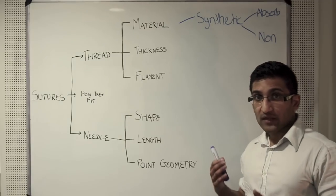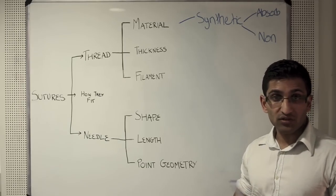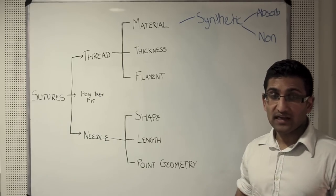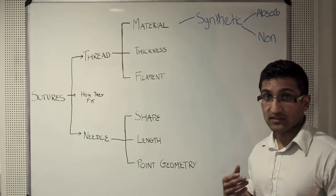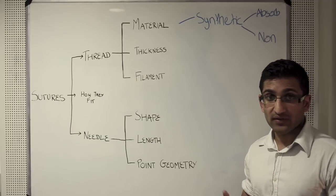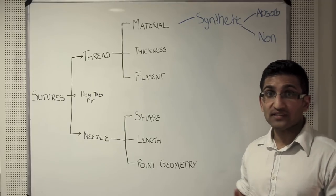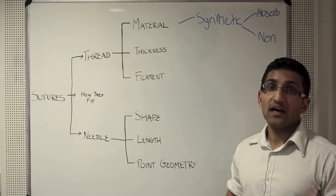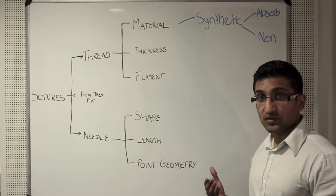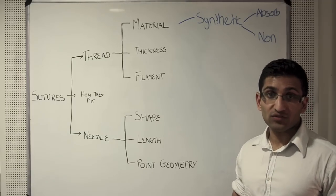You tend to use absorbable sutures on deeper structures and not on superficial structures. This is because as the suture material dissolves or is broken down over time, it leads to tissue contracture, and if used on the skin this would lead to skin contractures and unsightly scars. Therefore, you use non-absorbable sutures on the skin and absorbable sutures on deeper structures.